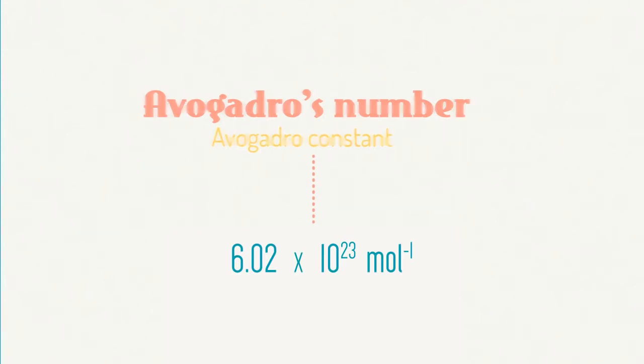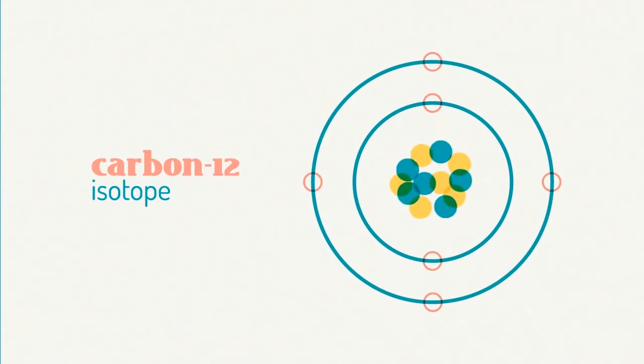Avogadro's number, Na, or the Avogadro constant, is 6.02 times 10 to the 23 particles per mole. It is the number of atoms per mole of the carbon-12 isotope.